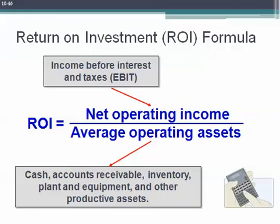ROI is simply defined as our net operating income divided by our average operating assets. Our net operating income is income before taxes, and it's sometimes referred to as earnings before interest and taxes, or EBIT. Our operating assets include cash, accounts receivable, inventory, plant and equipment, and all other assets held for operating purposes. Net operating income is used in the numerator because the denominator only consists of operating assets, and typically we'll use average operating assets for the year — beginning assets plus ending divided by two.